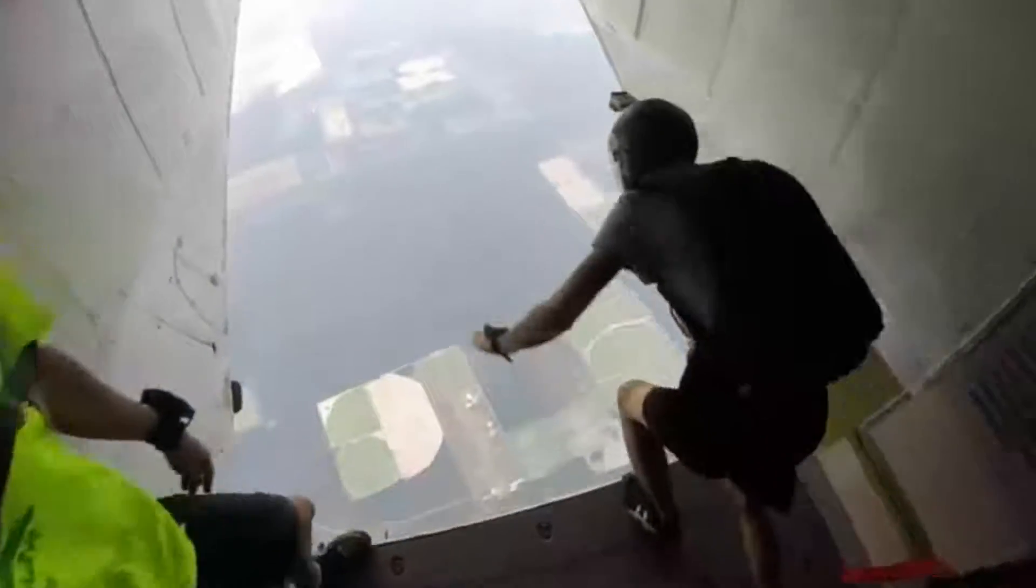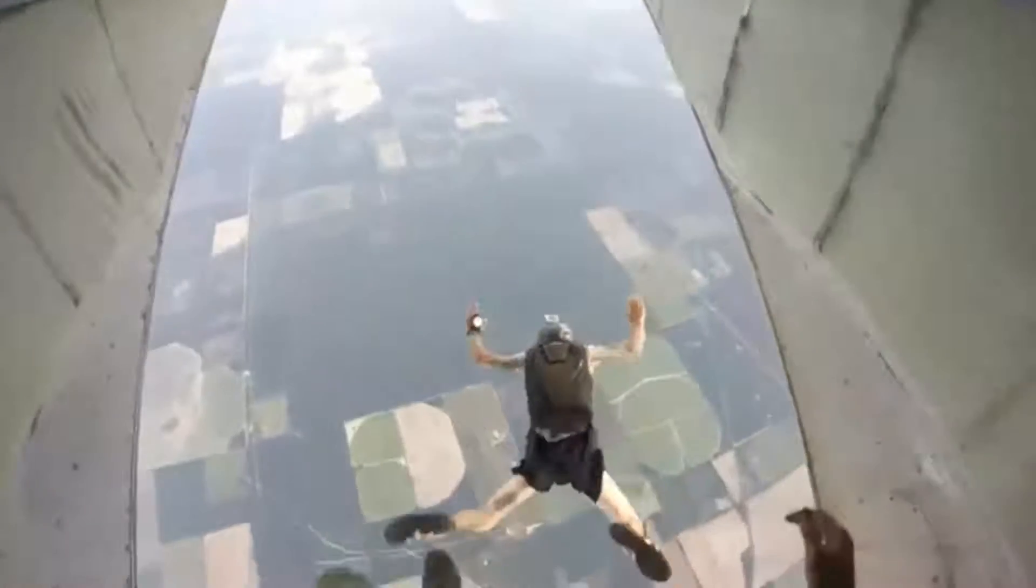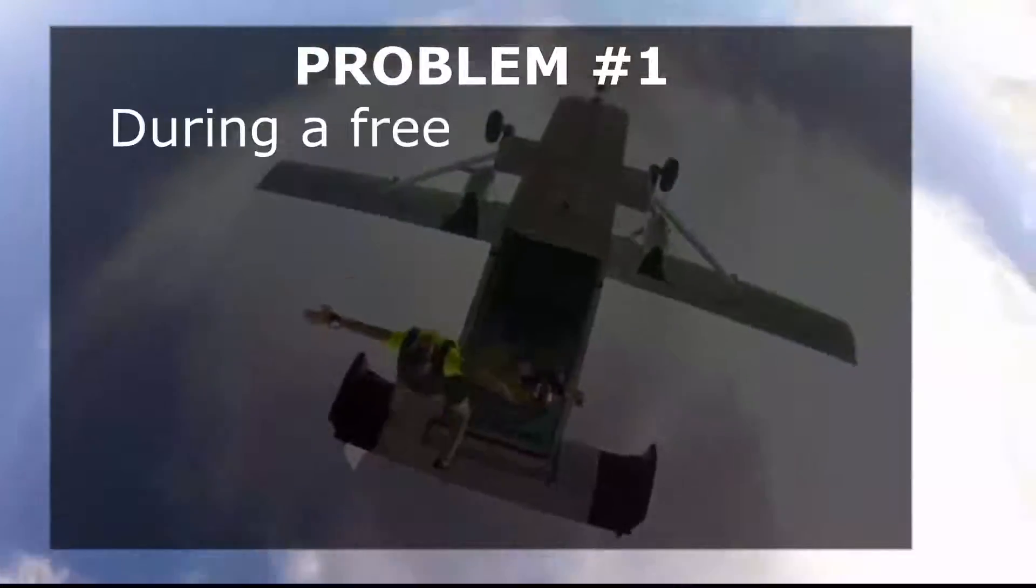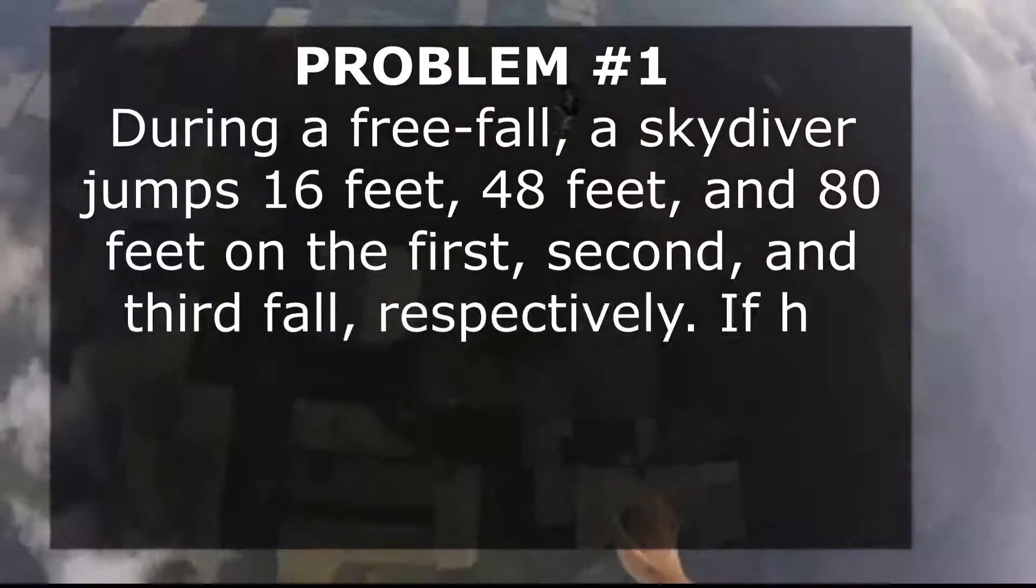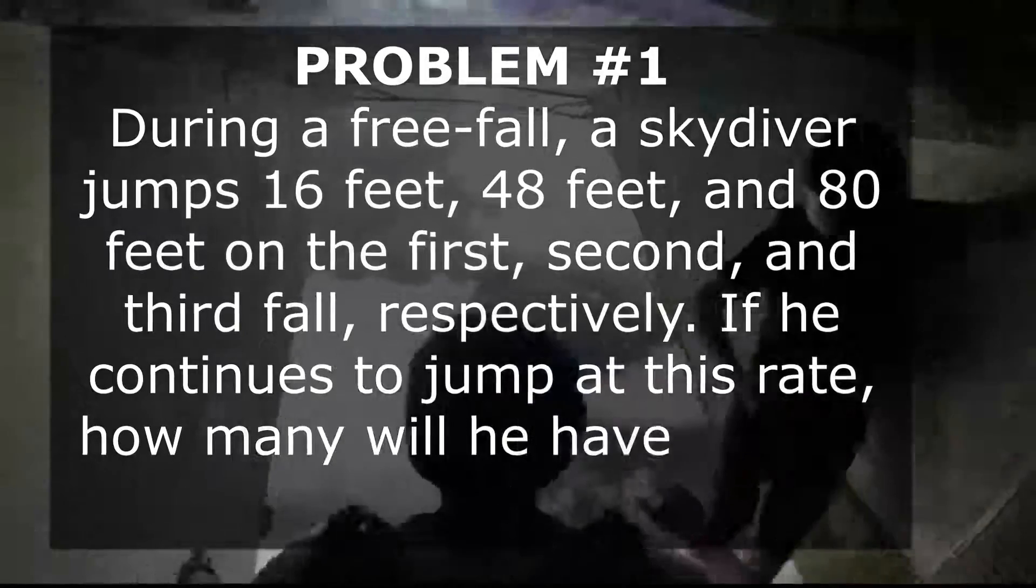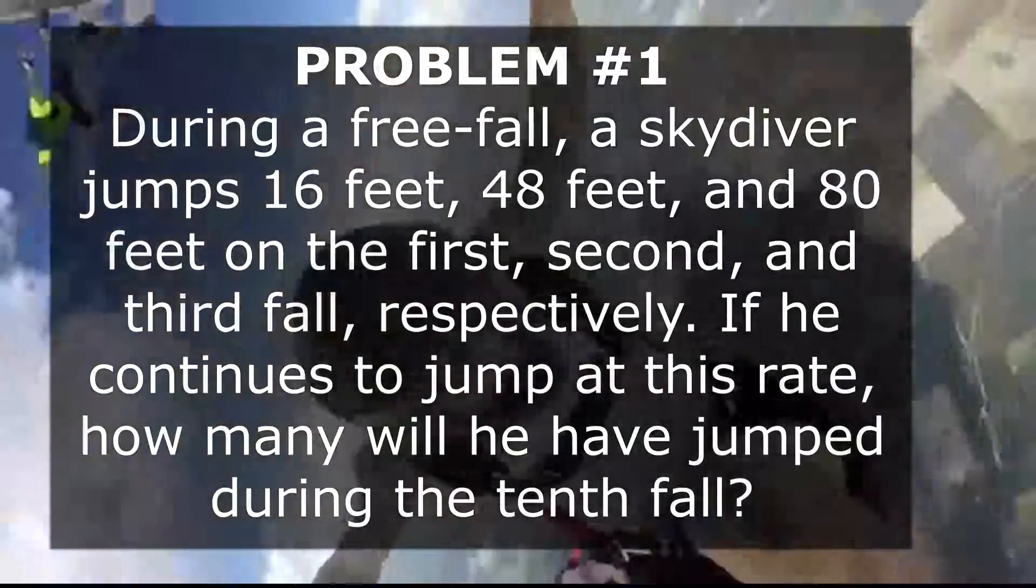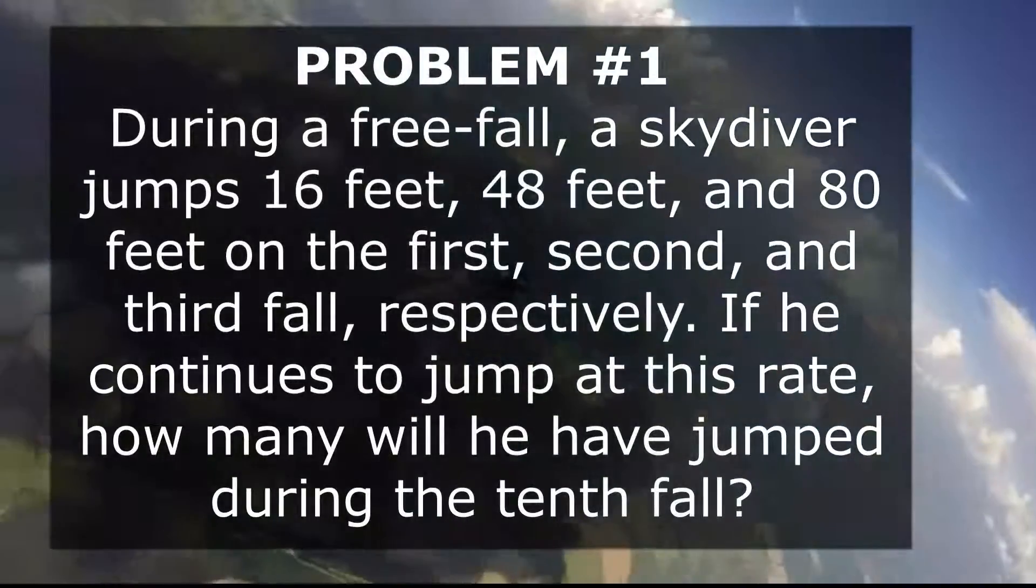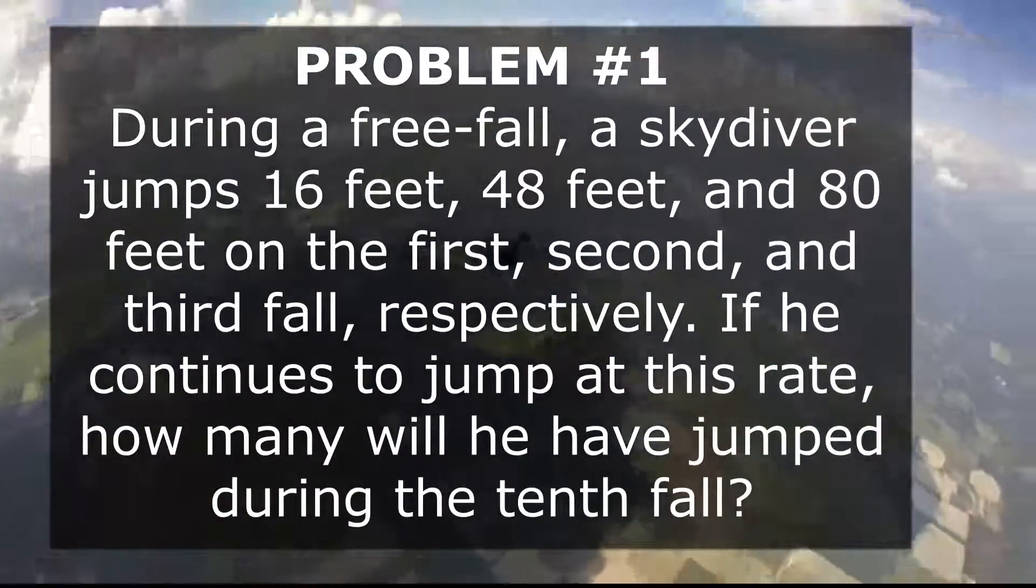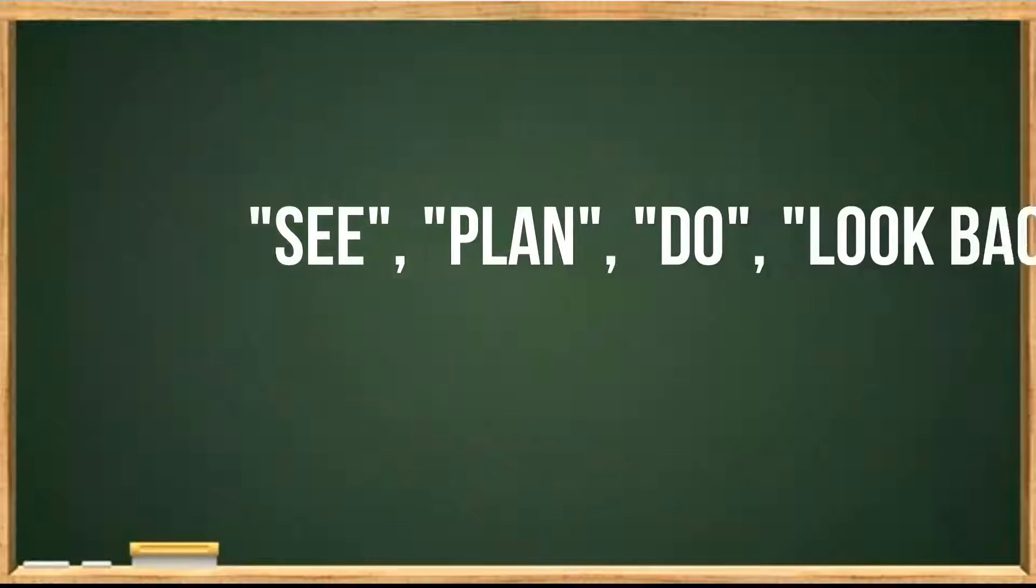Now here is a problem involving skydiving. During a free fall, a skydiver jumps 16 feet, 48 feet, and 80 feet on the first, second, and third fall respectively. If he continues to jump at this rate, how many will he have jumped during the tenth fall? To answer this, we will be using a procedure called See, Plan, Do, Look Back.